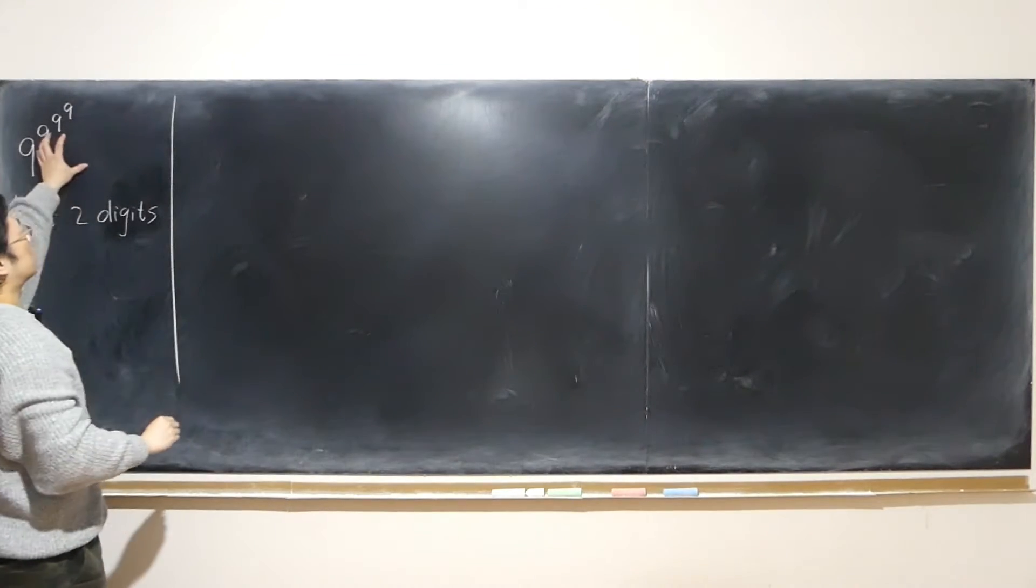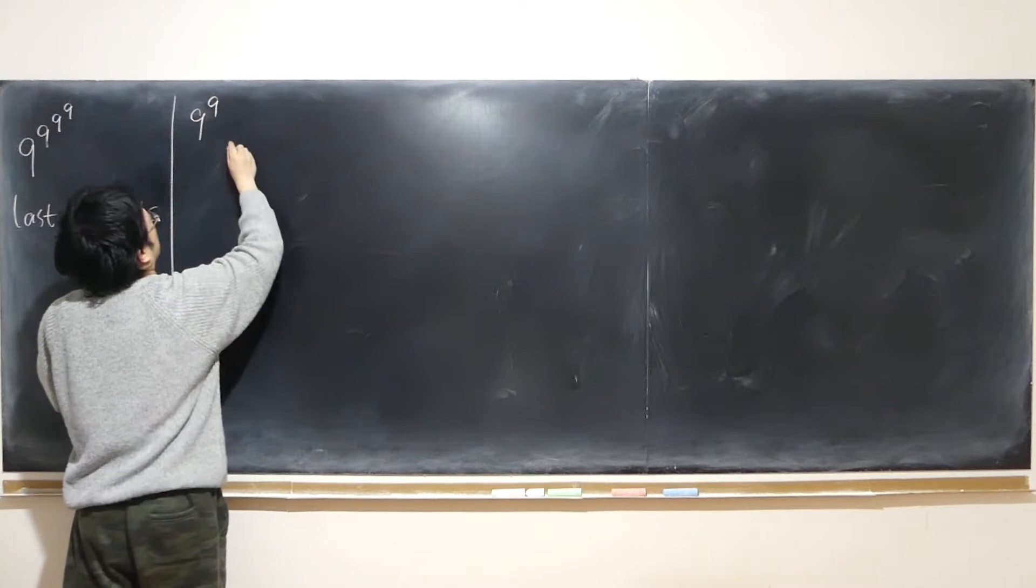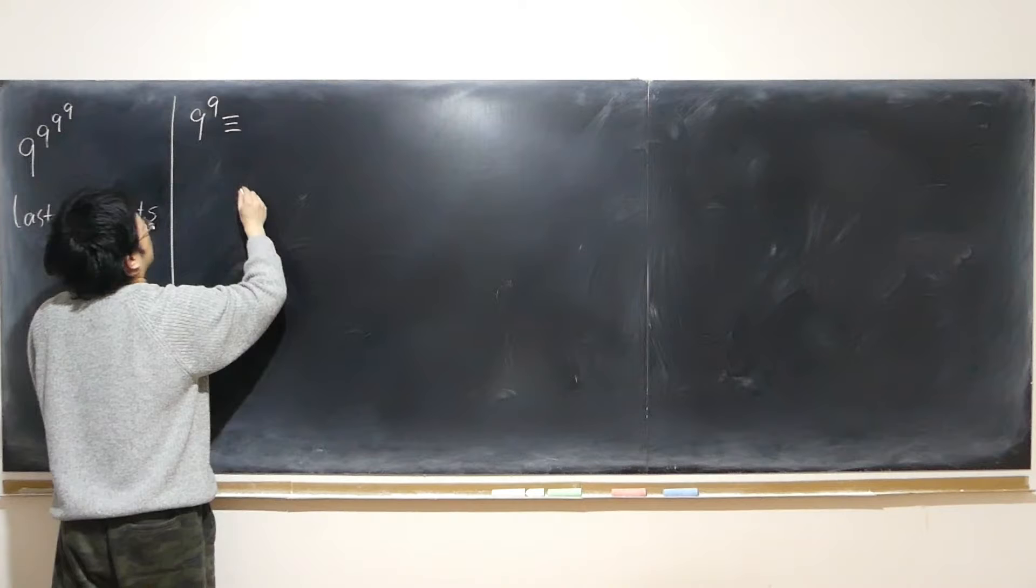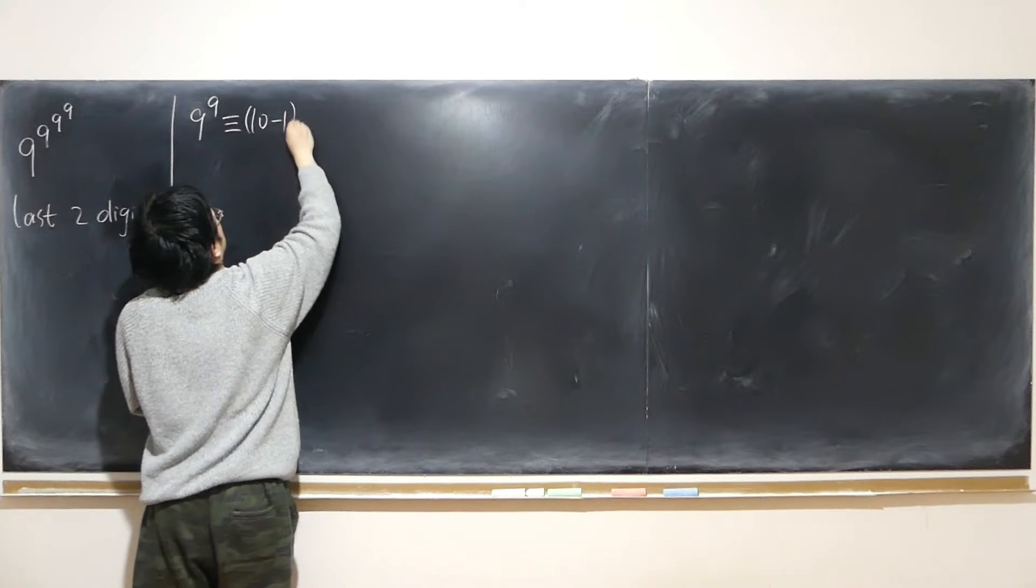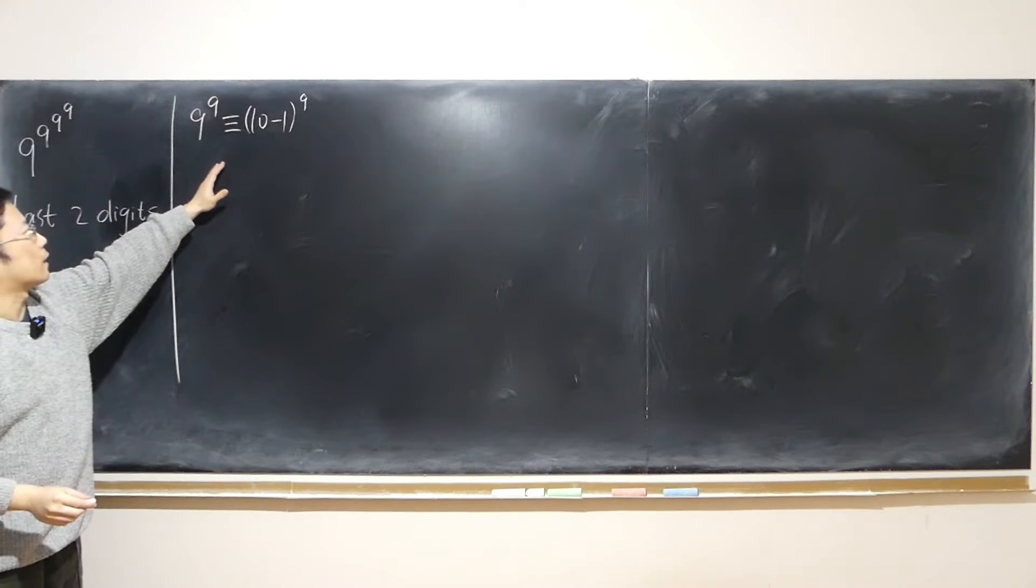So that's a big number. So first, let's look at smaller numbers. That's 9 to the power of 9. That can be written into (10-1) to the power of 9, equal to each other. Of course, congruent sign, also fine.